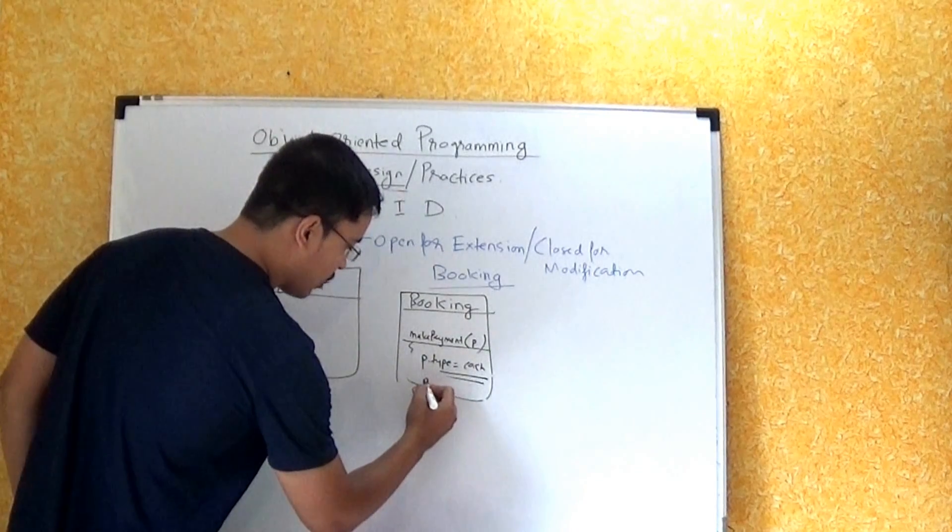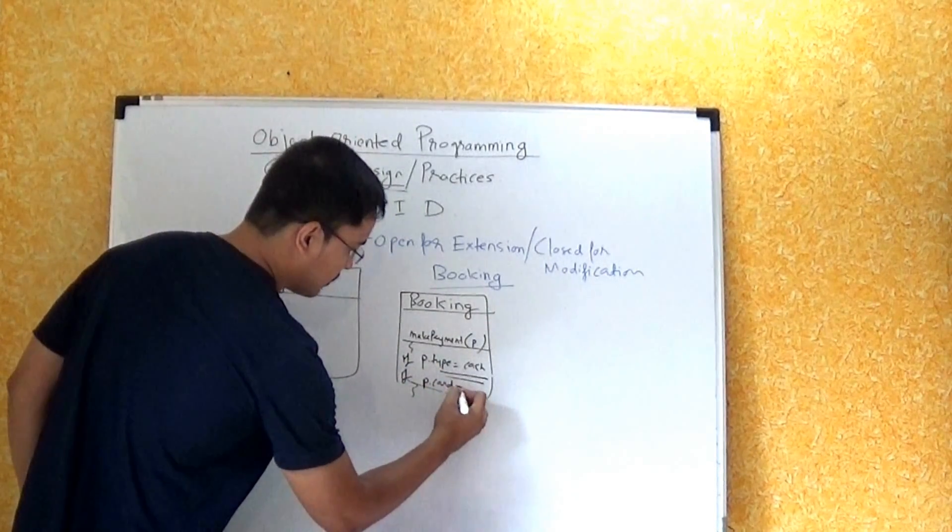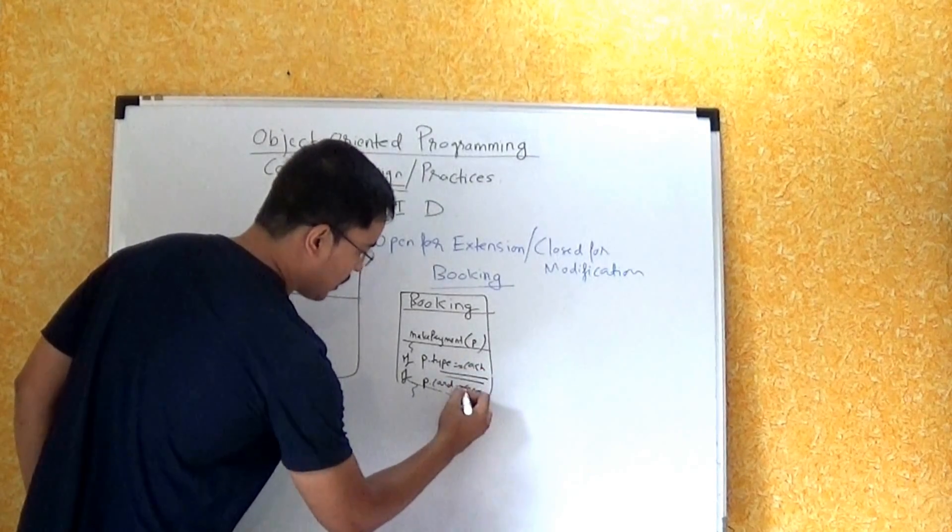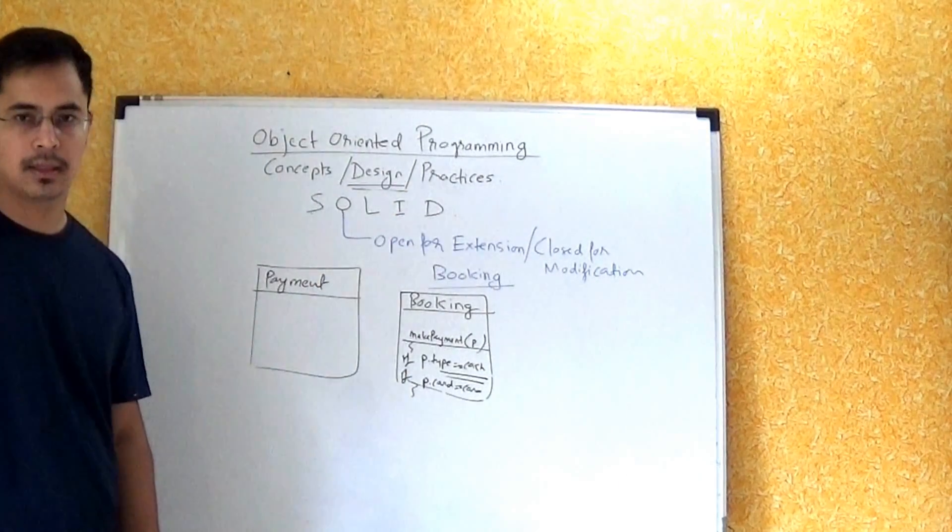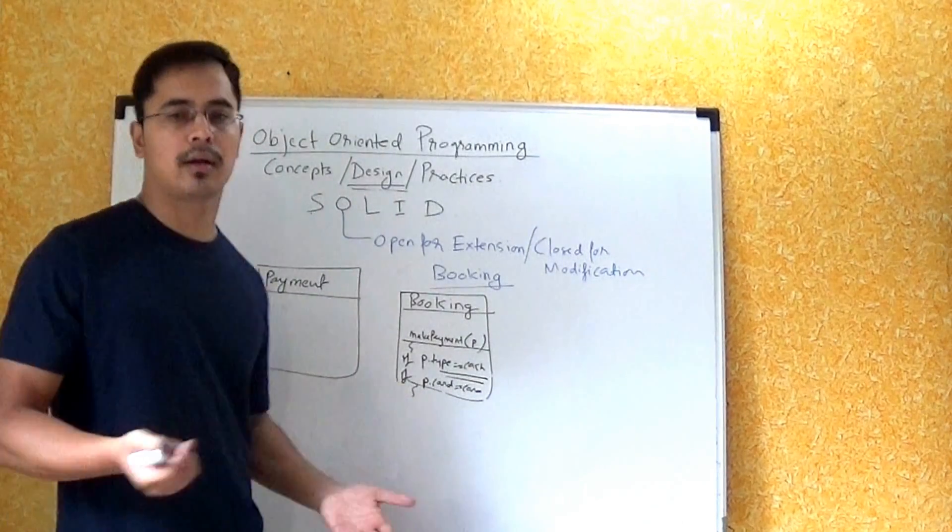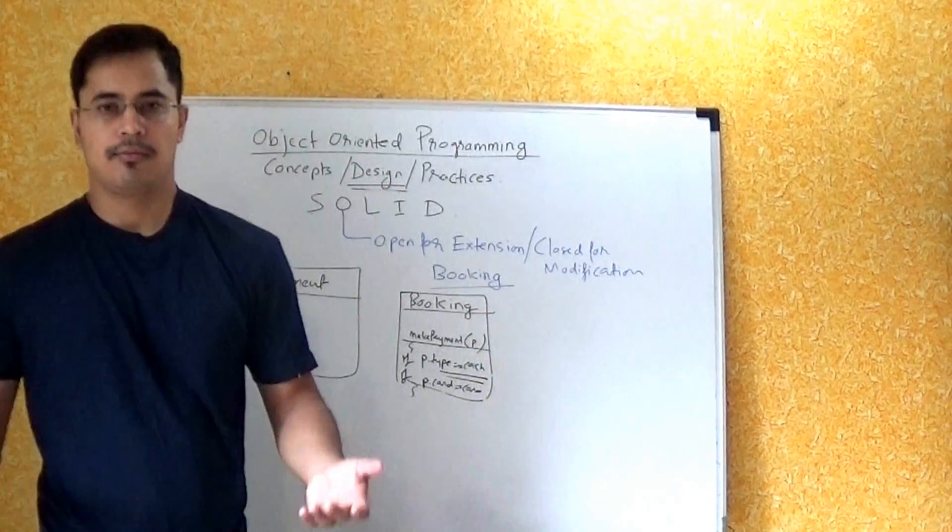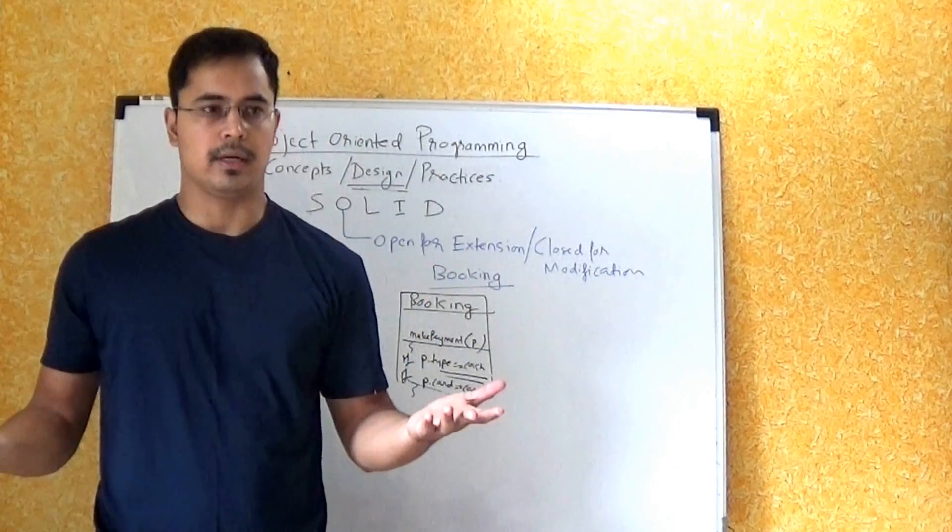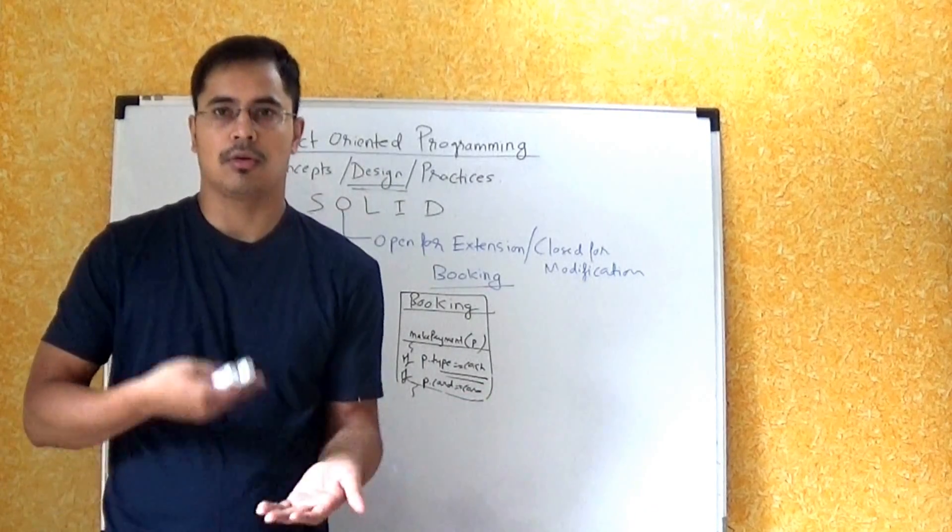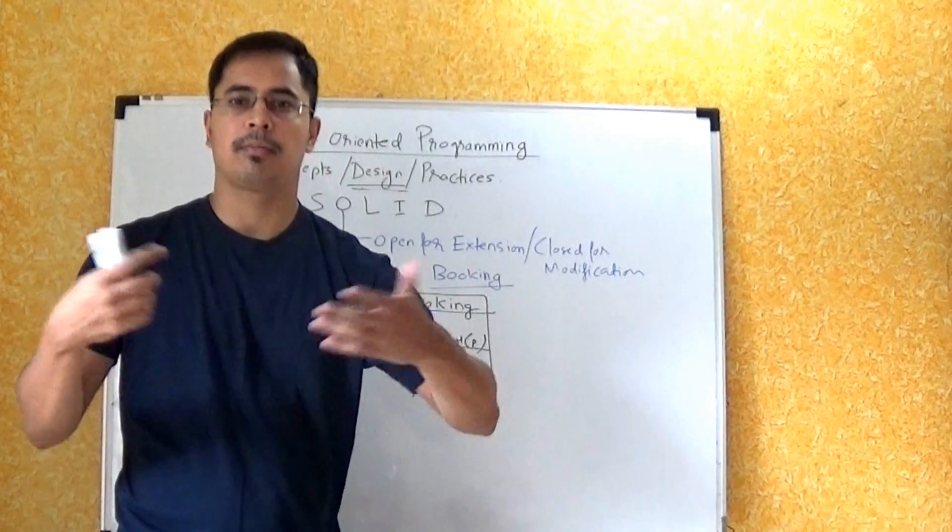If p.type == cash, write some cash logic. If p.type == card, then do some card logic. The problem with this code is that, yeah obviously it will work, there is no problem.